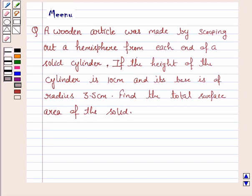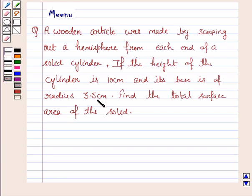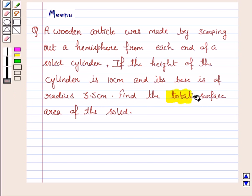Hello and welcome to the session. Let's discuss the following question. A wooden article was made by scooping out a hemisphere from each end of a solid cylinder. If the height of the cylinder is 10 cm and its base is of radius 3.5 cm, find the total surface area of the solid.